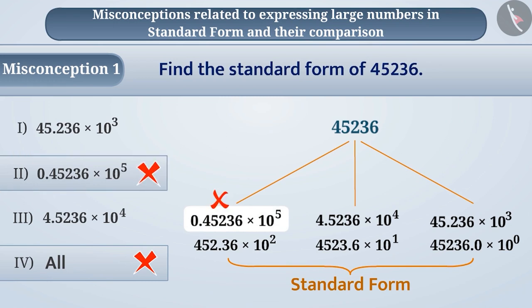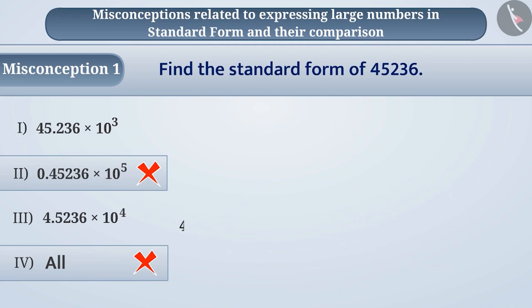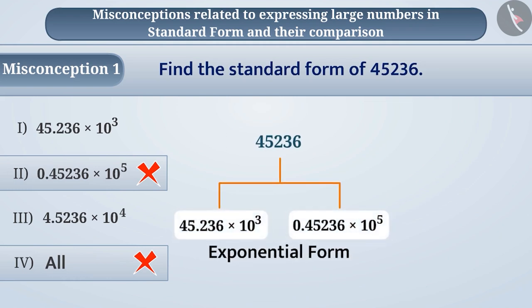The correct understanding is that both 45.236 × 10³ and 0.45236 × 10⁵ are exponential forms of the given number, but they are not the standard forms.